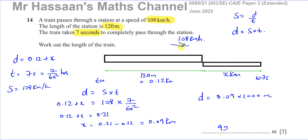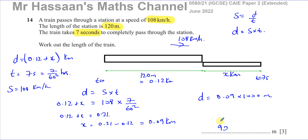So the length of the train is 90 meters. The station is 120 meters, and traveling at that speed it takes 7 seconds to completely pass through the station. The key issue with this question is the incompatible units. Rather than converting the speed, I chose to convert the other units to kilometers and hours so they're compatible with kilometers per hour. The answer comes out in kilometers, and multiplying by 1000 gives 90 meters.